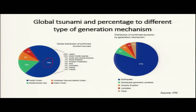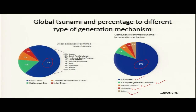This diagram shows the mechanism from which tsunamis can be generated. 81 percent of tsunamis are generated by earthquakes; 6 percent by earthquake-generated landslides; 5 percent by volcanic eruption — as seen in the recent Anak Krakatau eruption, where subsequent landslides generated tsunami in nearby areas; 4 percent by landslide alone; and 4 percent by other sources such as meteorite impact.